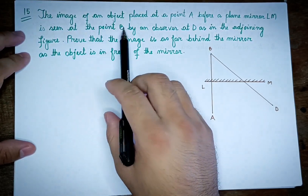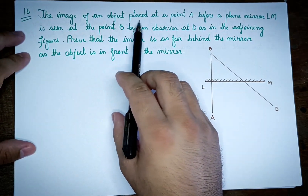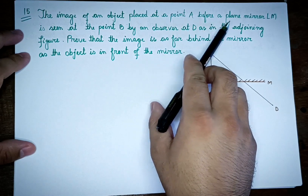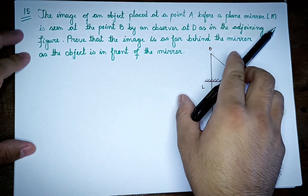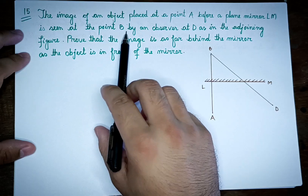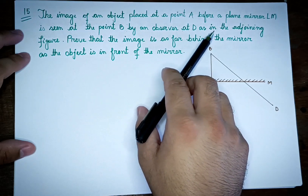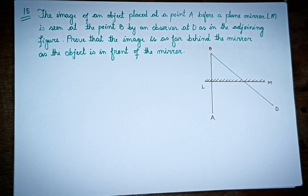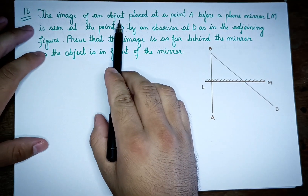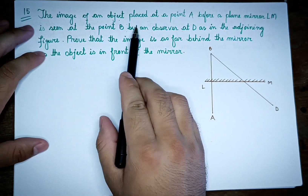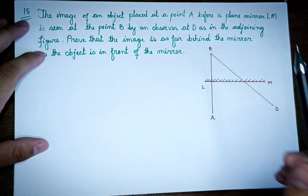The image of an object placed at a point A before a plane mirror LM is seen at the point B by an observer at D, as in the adjoining figure.